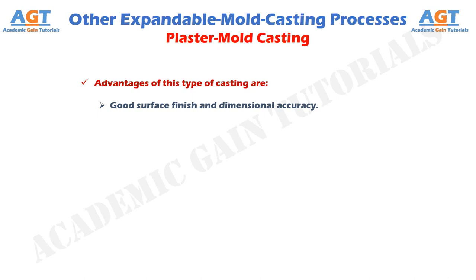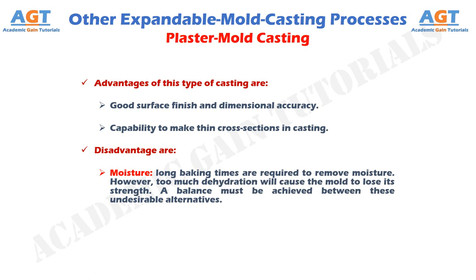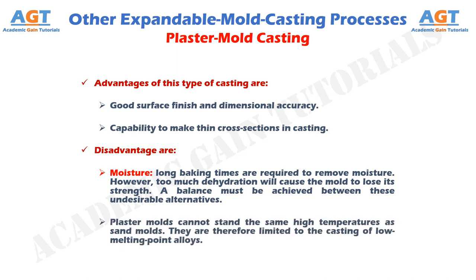Advantages of plaster mold casting are: good surface finish and dimensional accuracy, and capability to make thin cross sections in casting. Disadvantages of plaster mold casting are: moisture — long baking times are required to remove moisture, however too much dehydration will cause the mold to lose its strength, so a balance must be achieved between these undesirable alternatives. Plaster molds cannot stand the same high temperatures as sand molds, and are therefore limited to the casting of low melting point alloys.